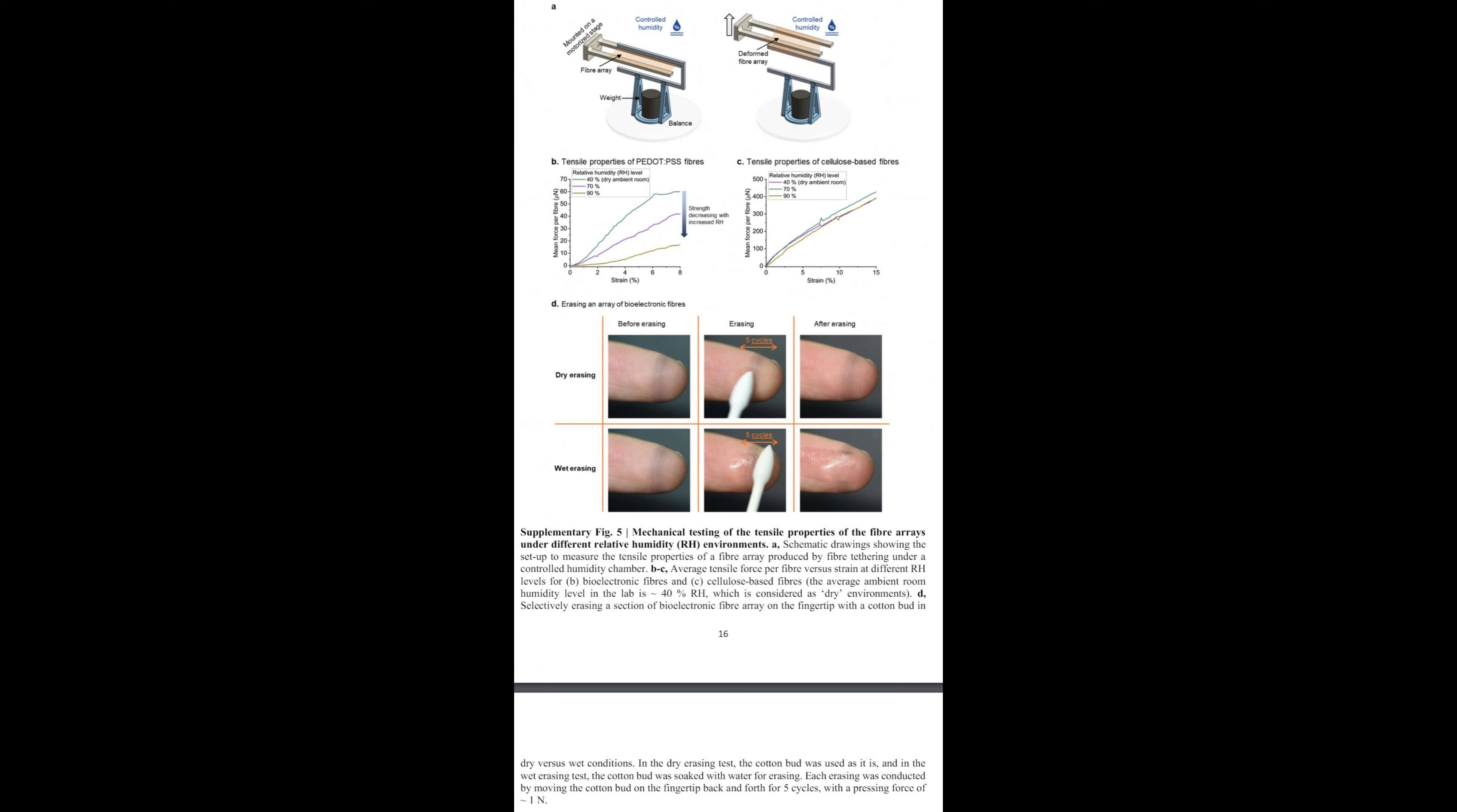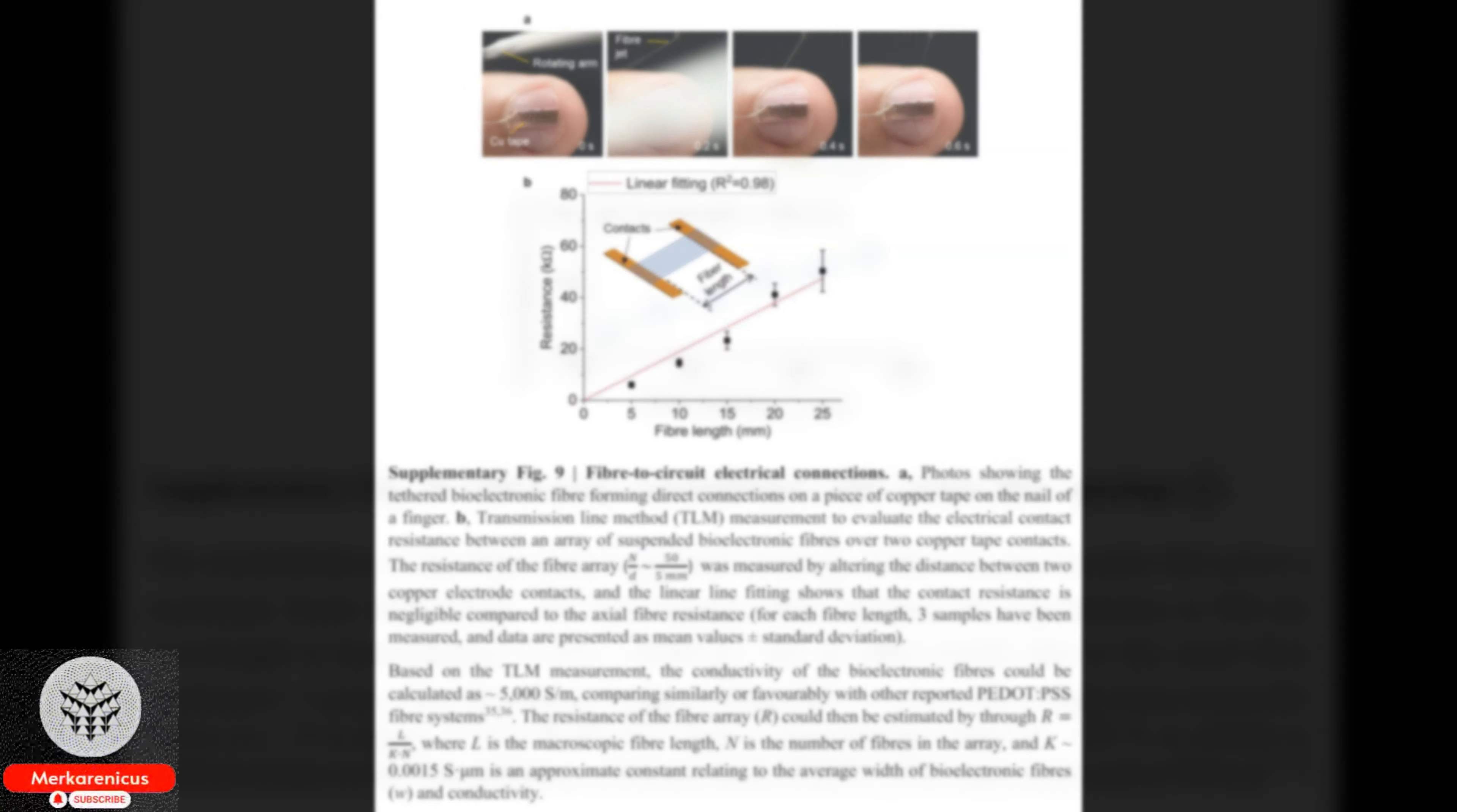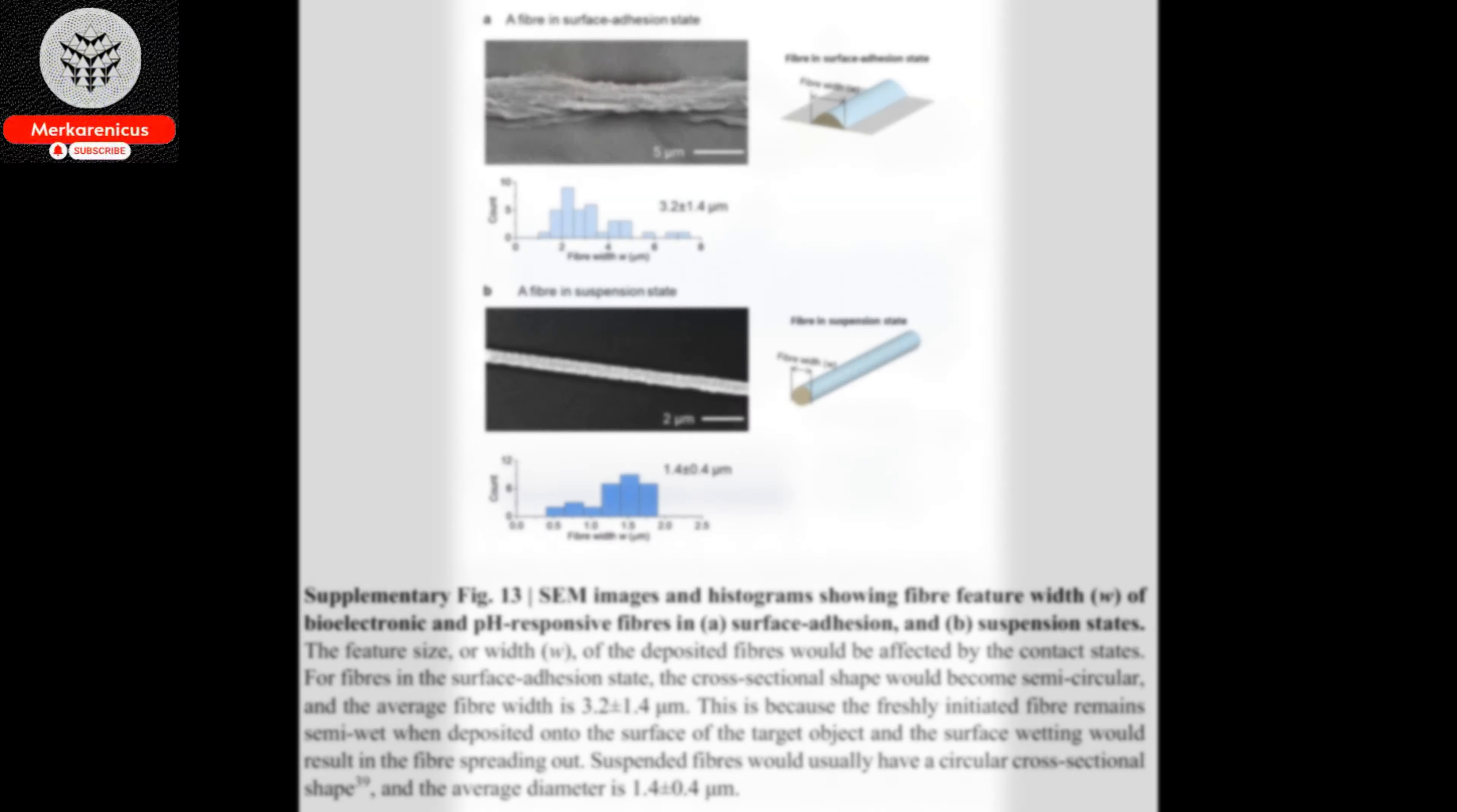When these fibers are printed onto human skin, they conform perfectly to its surface, allowing the sweat pores to be exposed without the wearer even being aware of their presence. Preliminary tests conducted on a human finger indicate that these fibers have the potential to serve as continuous health monitors. The journal Nature Electronics has published findings on a method that minimizes waste and emissions while enhancing living structures. This innovative approach has broad applications across various industries including healthcare, virtual reality, electronic textiles, and environmental monitoring.